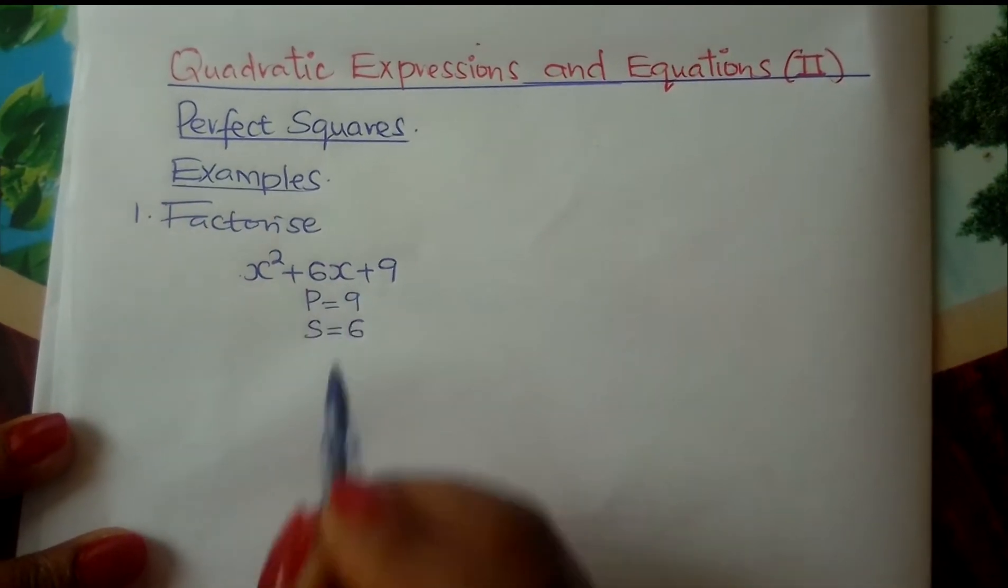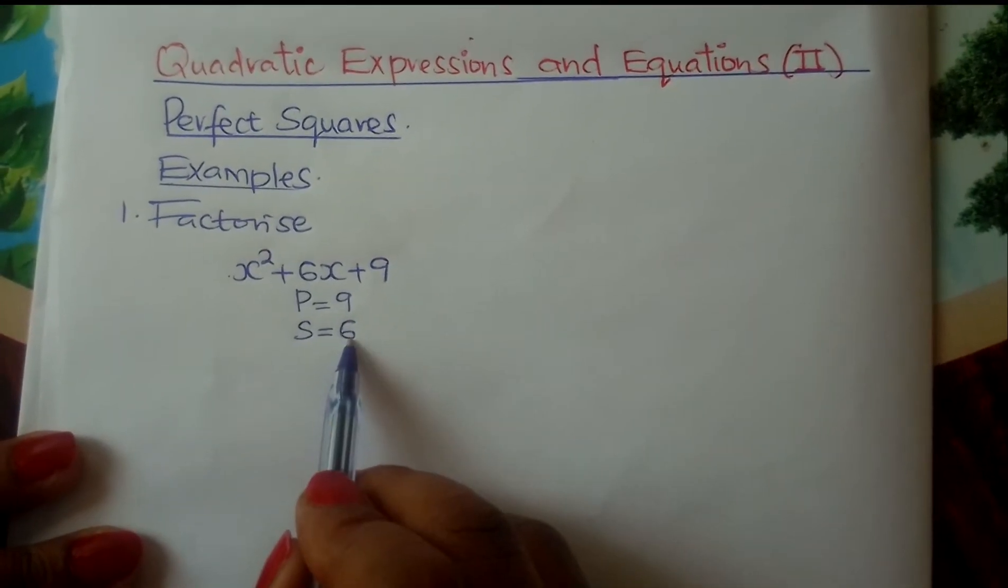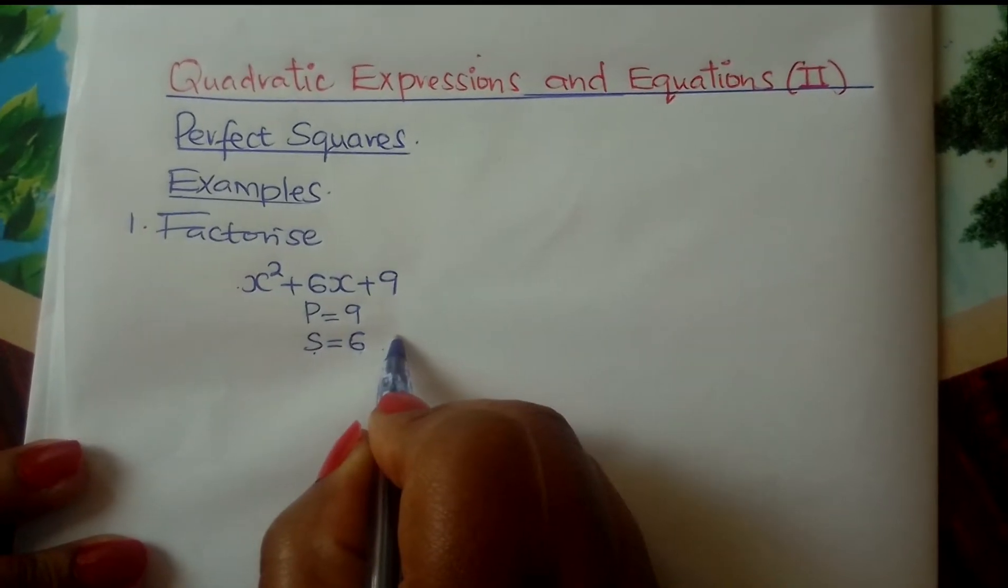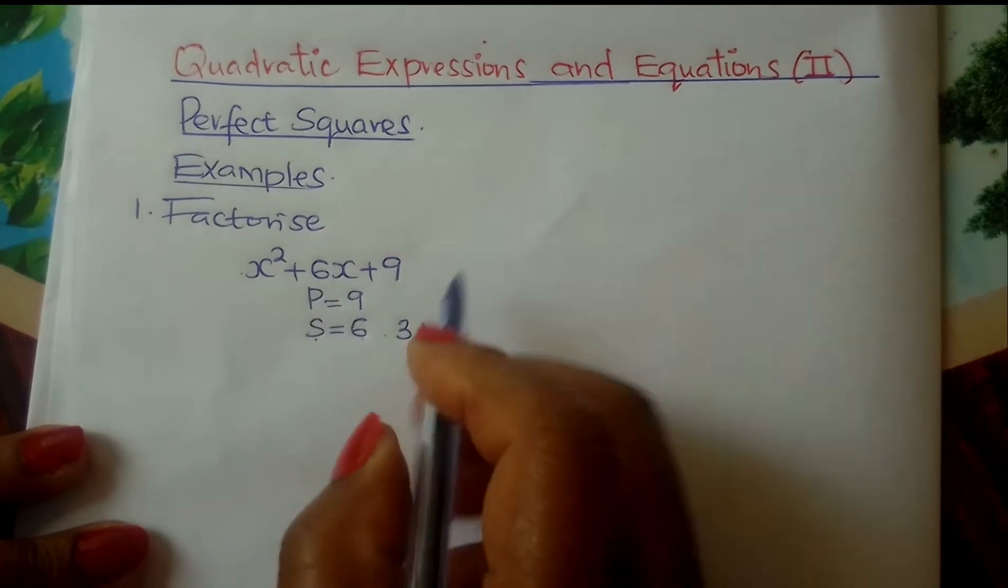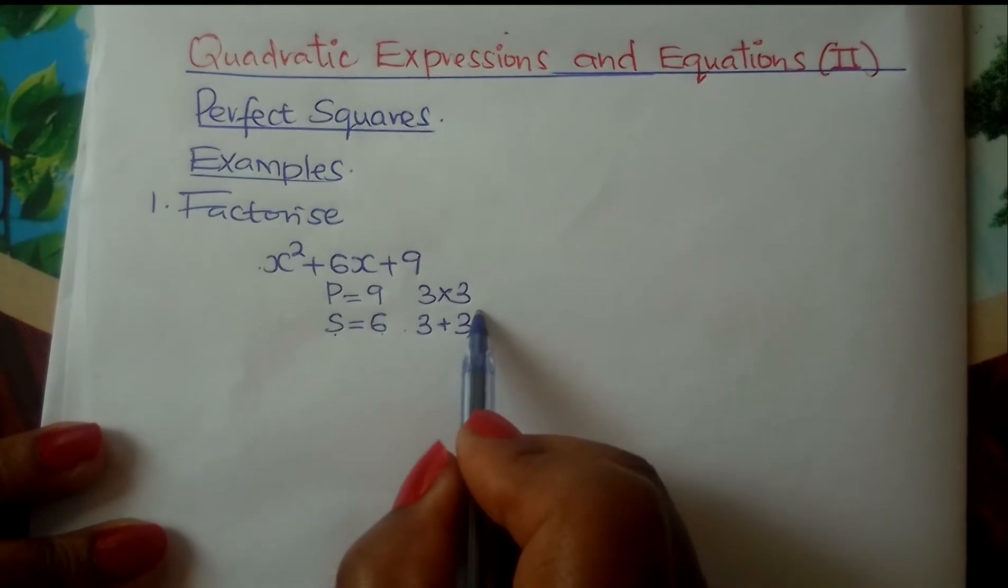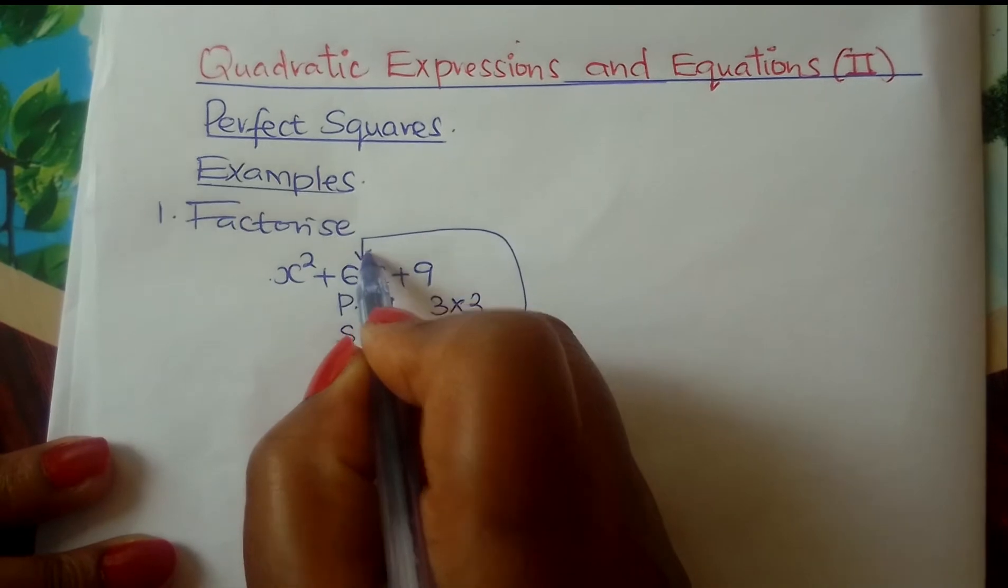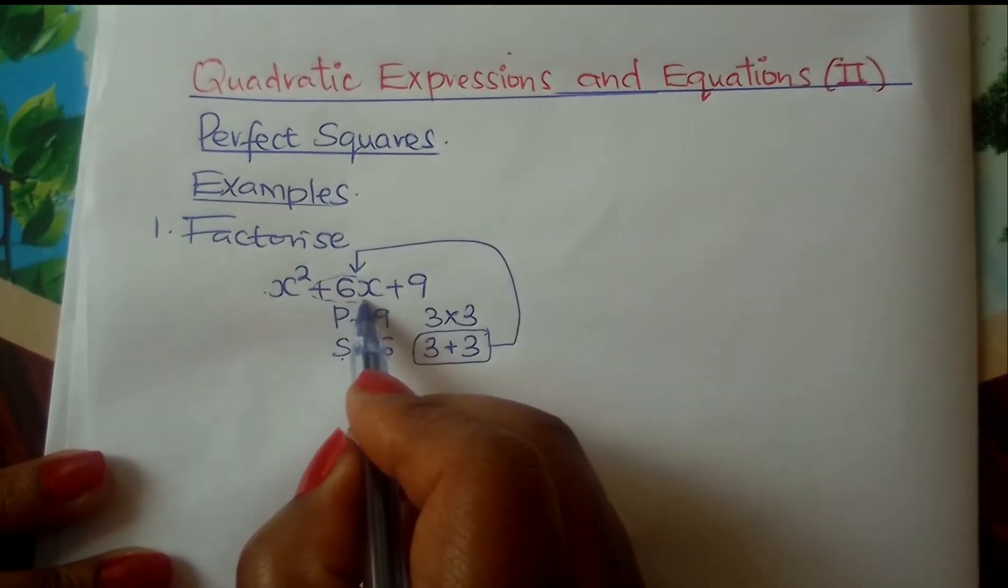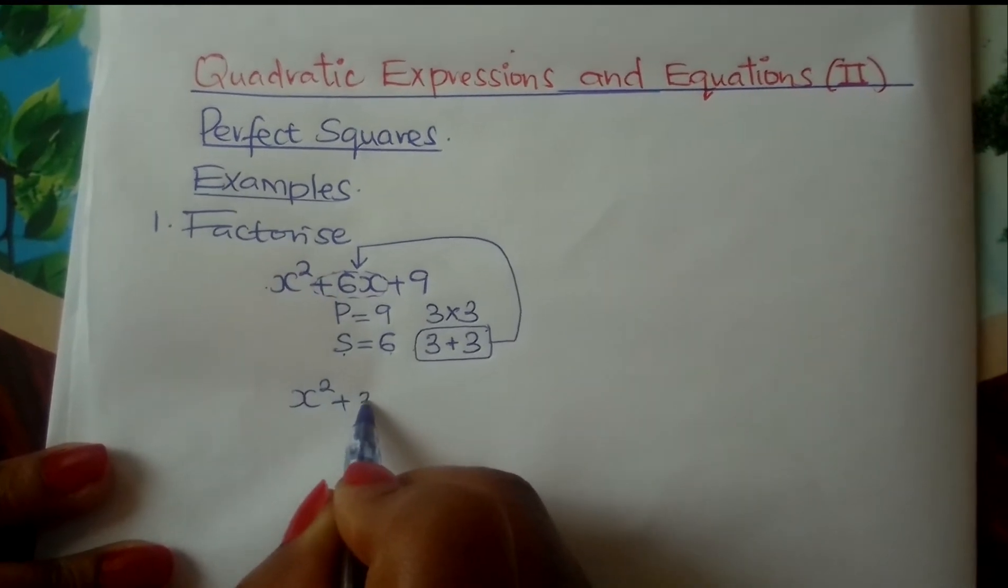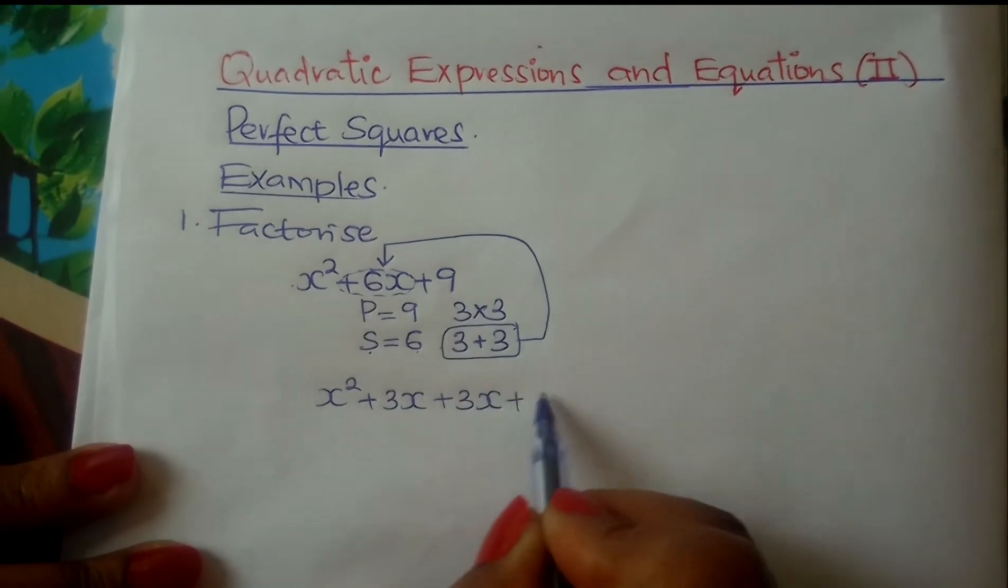6 is the coefficient of x of the middle term. Now which are these two numbers that you add to get 6? These are 3 and 3, and you also multiply them to get 9. Then from here you pick those numbers and substitute them in the middle term there. And therefore you write x² + 3x + 3x + 9.